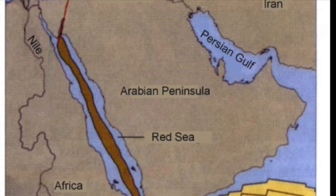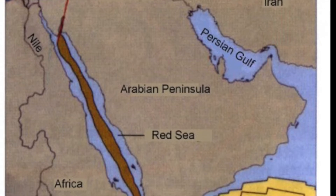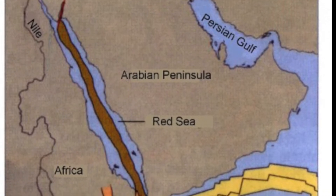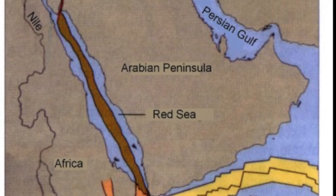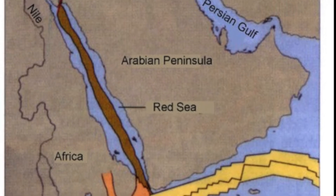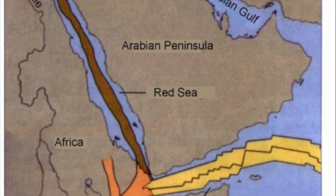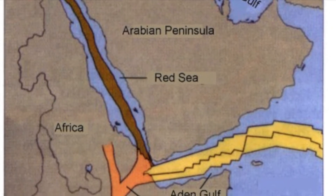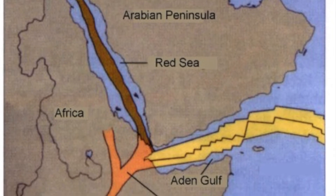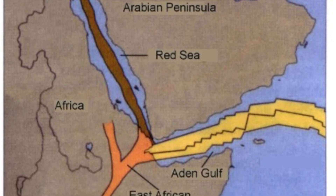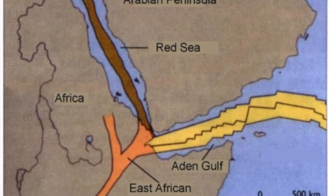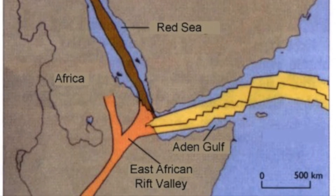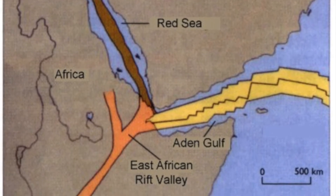This rifting consists of the Red Sea, Gulf of Aden, and the East African Rift Valley including Ethiopia, Kenya, Uganda, and Tanzania. There are three plates that are rifting from one another. The part where these three plates join is called the triple junction, which is located between the Red Sea, Gulf of Aden, and Ethiopia.